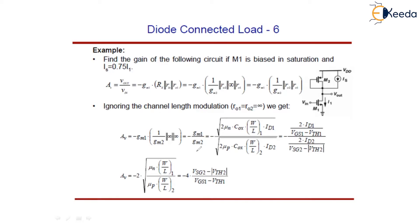This simplifies to minus GM1 by GM2. Substituting the transconductance values of transistor 1 and the diode-connected device 2, we get: negative square root of (2·mu1·Cox·W/L1·ID1) divided by (2·mu2·Cox·W/L2·ID2), which can also be expressed in terms of overdrive voltage as (2·ID1)/(VGS1 − VTH1) over (2·ID2)/(|VGS2 − VTH2|).